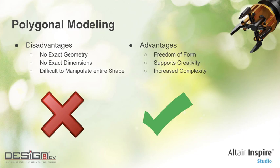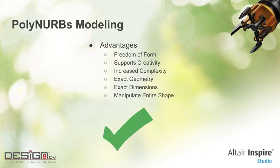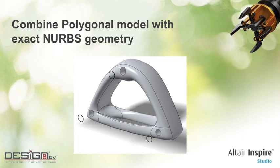If both of these methods have their disadvantages and advantages, then we introduce PolyNURBS, which is the best of both. You have freedom of form, your creativity is fully supported, you can have increased complexity, but you can also have exact geometry and exact dimensions, and it is easier to manipulate the entire shape. With PolyNURBS modeling, you combine a polygonal model with exact NURBS geometry. So enough about this — let's see how it works in practice.